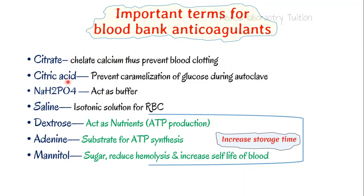Citric acid prevents the caramelization of glucose during autoclave. Caramelization is simply the oxidation of glucose — the browning of glucose due to heat during the autoclave process. When a solution is prepared, we have to sterilize it, as there may be infection introduced during the formation of this anticoagulant.